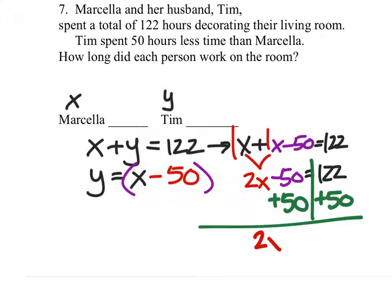And I still have my 2x. This equals 122 plus 50, 172. That's 2 times x. Inverse operation is to divide both sides by 2.